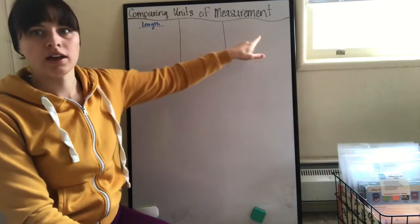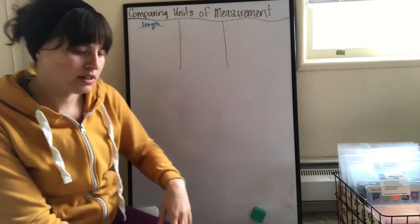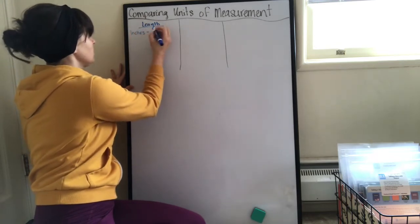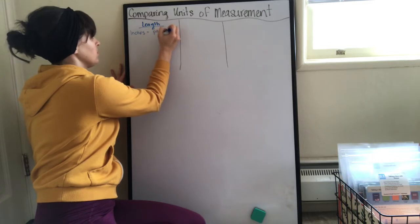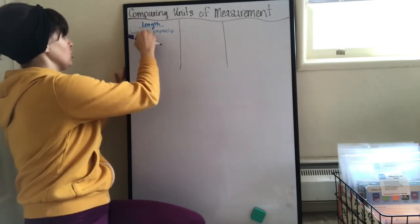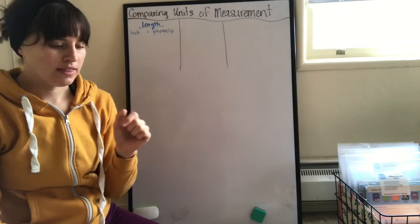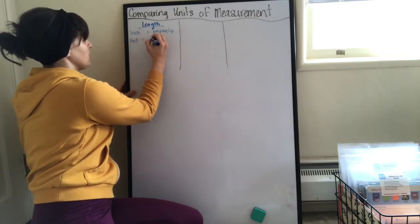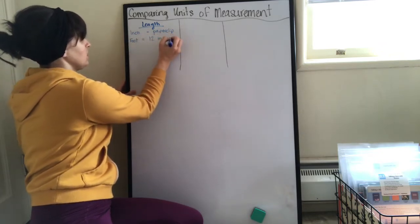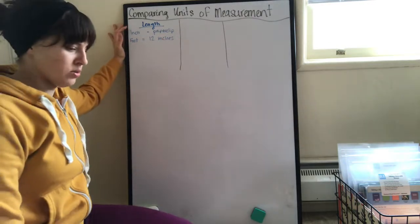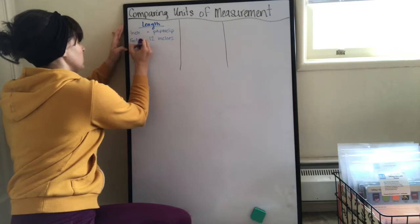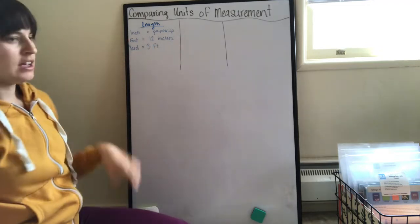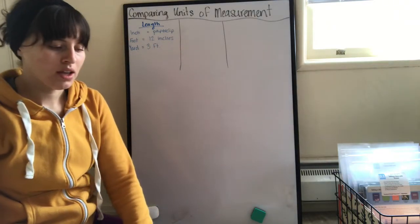First thing is inches. Remember an inch is about a paperclip. Then we're going to write foot. A foot is 12 inches. Then yard. One yard is three feet.